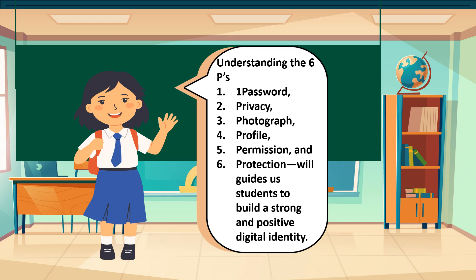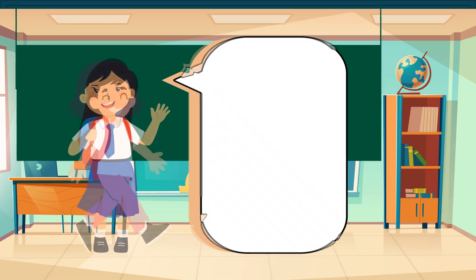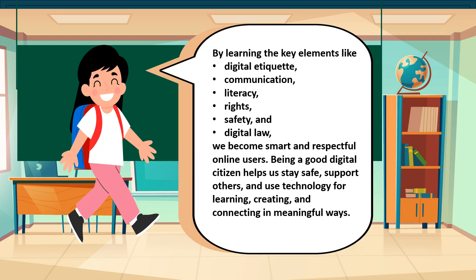Understanding the 6 Ps — Password, Privacy, Photograph, Profile, Permission, and Protection — will guide students to build a strong and positive digital identity. By learning the key elements like digital etiquette, communication, literacy, rights, safety, and digital law, we become smart and respectful online users. Being a good digital citizen helps us stay safe, support others, and use technology for learning, creating, and connecting in meaningful ways.